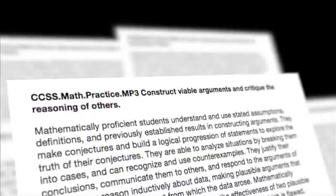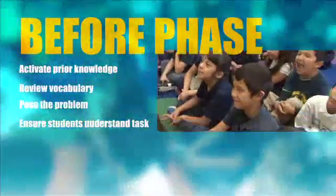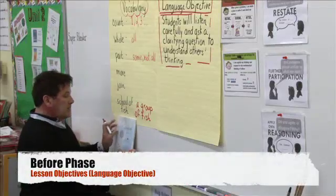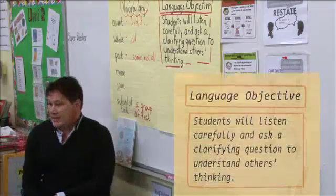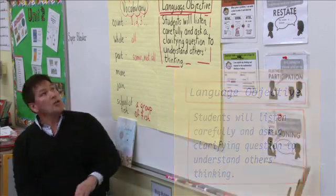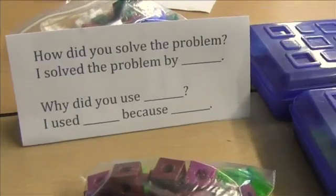Math practice one, which calls for students to persevere and problem-solve, and math practice three, which correlates to my language objectives, to have students discuss and answer questions of each other. In today's math lesson, we're going to do a lot of talking and listening. We have what they call a language objective — listening and speaking. I incorporated an English language objective into my lesson, but the majority of the students are English language learners.